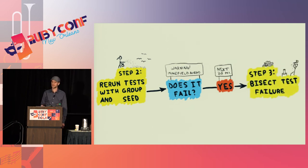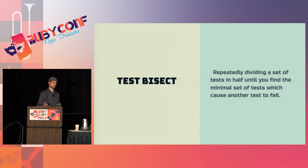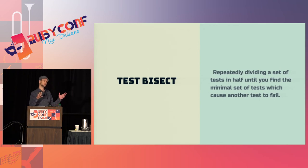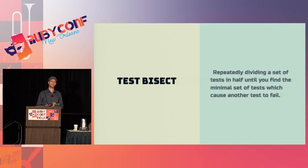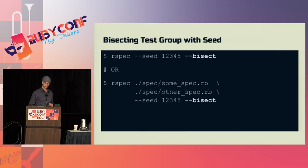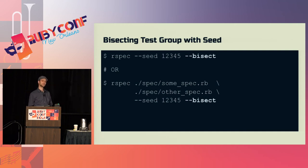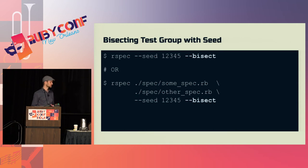If the rerun fails, the next thing we want to do is bisect that failure. In RSpec 3.3 they added a feature that will automatically do this for you. Bisecting means we take the full group of tests that ran with the failing test and cut them in half, and in half again, until we get to the minimal command required to reproduce the failure. Ideally you end up with one passing test and your failing test, and when those two run together in a particular order you'll see the failure. The only difference in the command is replacing the fail-fast flag with the bisect flag — this will take a long time but it will reduce the set to a minimal command.